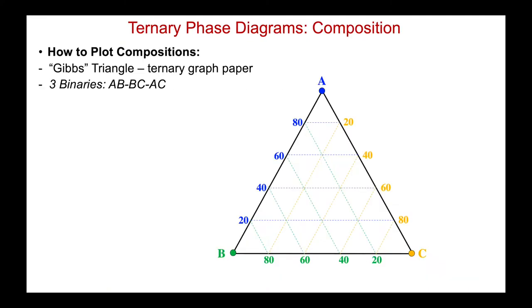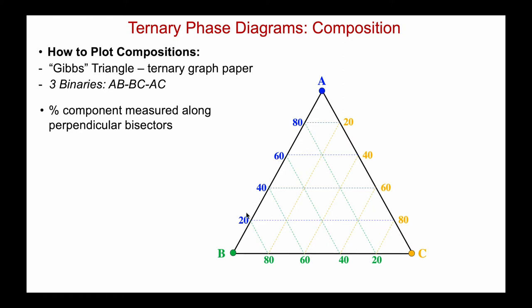We'll begin by looking at how we plot compositions in a three-component system. We use the so-called Gibbs triangle, which is essentially just a piece of ternary graph paper. We have three binaries along the edges — AB, BC, and AC — and we measure the percent of each component along the perpendicular bisectors of the triangle.